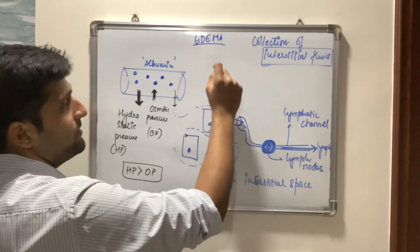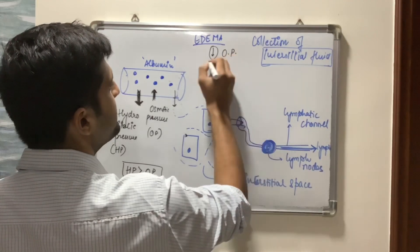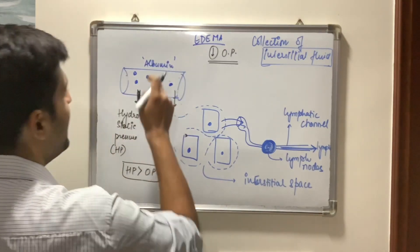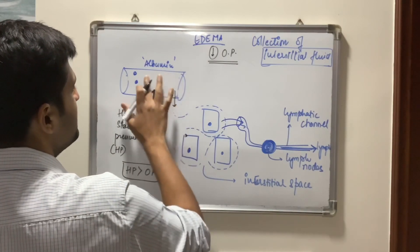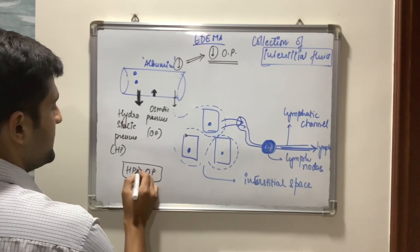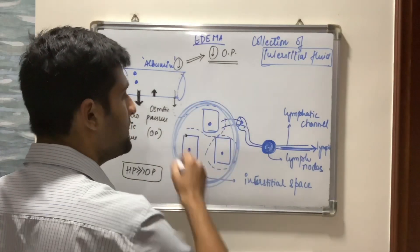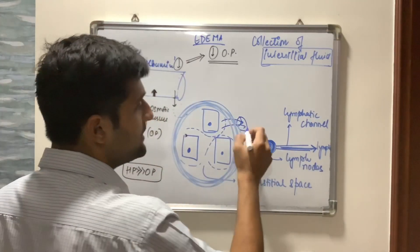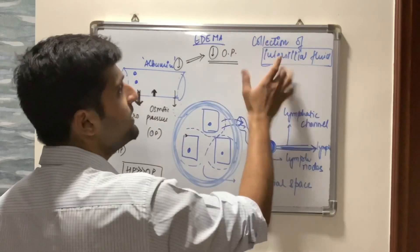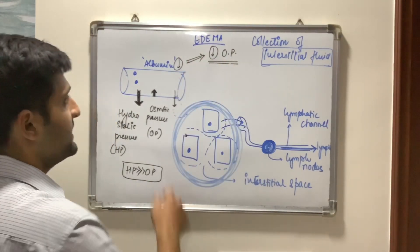A very common reason for development of edema is a decrease in osmotic pressure. The osmotic pressure will decrease if albumin decreases. If albumin decreases, osmotic pressure decreases, and the hydrostatic pressure becomes much greater than osmotic pressure — meaning more fluid accumulates in the interstitial space, overwhelming the draining capacity. This accumulation of interstitial fluid is known as edema.